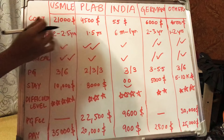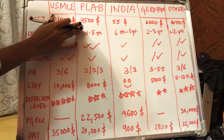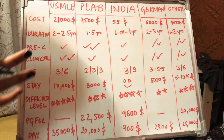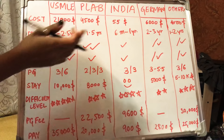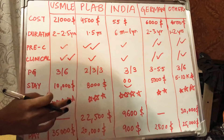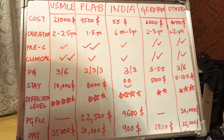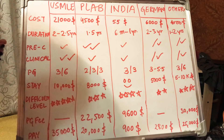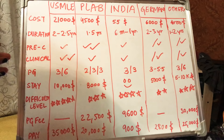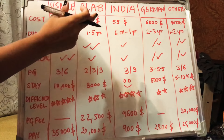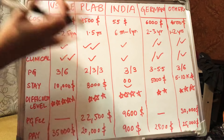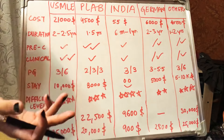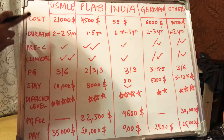For PLAB, the cost of the application fees — that is PLAB 1 and PLAB 2 — is $4,500, which also includes one month of travel expenses for PLAB 2. In India, the cost of the exam is just $55, the cheapest among all options. The exam cost for Germany is about $6,000, which includes fees for the German language — about 4,000 euros — plus extra expenses. For other countries such as Canada and Australia, the application fee is $4,000. All figures are converted to dollars.